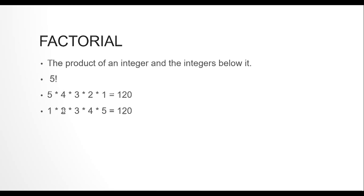So how I reach 120 is: 1 × 2 is 2, 2 × 3 is 6, 6 × 4 is 24, 24 × 5 is 120. So that is 5 factorial. Let's take another example — if we say 3 factorial, we mean 3 × 2 × 1, which is 6. So it's very simple and we need to write a program for it.